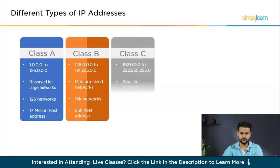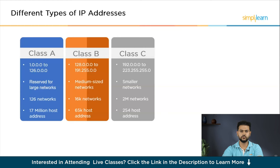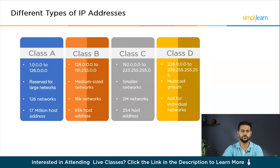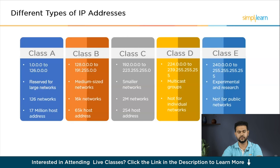Class C ranges from 192.0.0.0 to 223.255.255.0, and is commonly used for smaller networks. With approximately 2 million available networks, each Class C network can accommodate up to 254 unique host addresses. Class D ranges from 224.0.0.0 to 239.255.255.255 and is reserved for multicast groups — not assigned for individual networks but used for group communication. Class E ranges from 240.0.0.0 to 255.255.255.255 and is reserved for experimental purposes, not intended for general use on public networks; Class E addresses are set aside for testing and development.